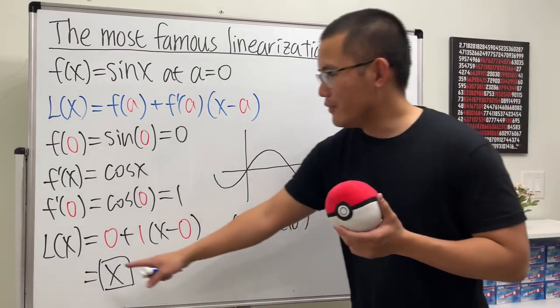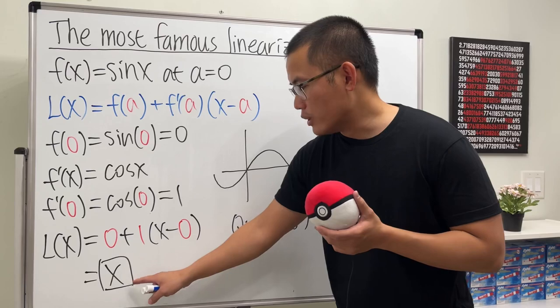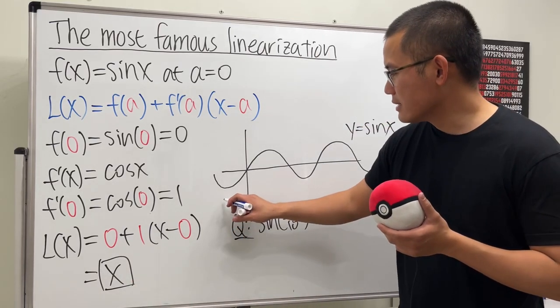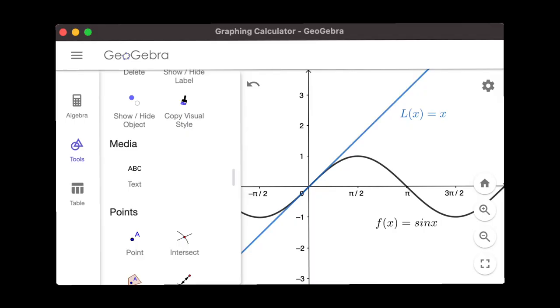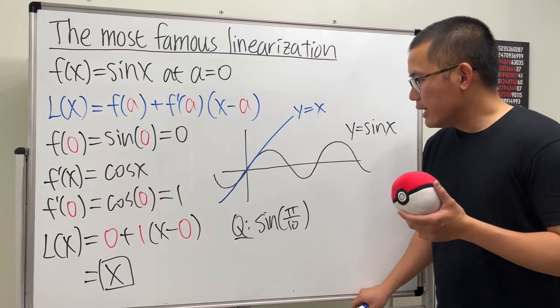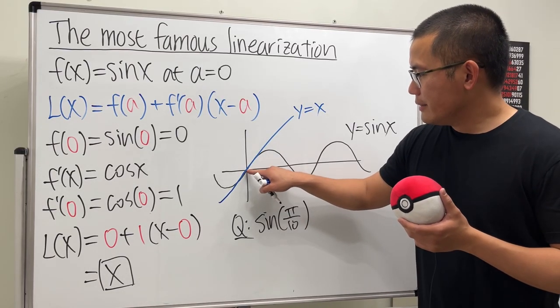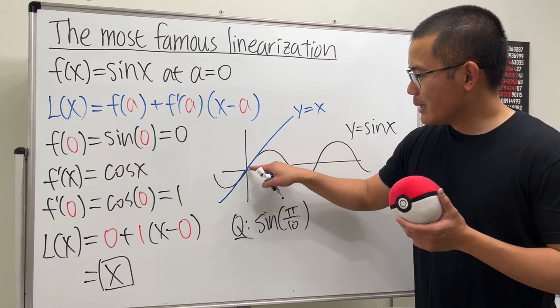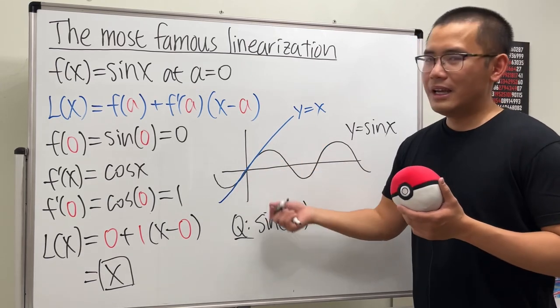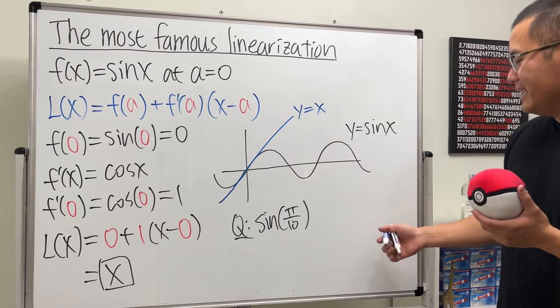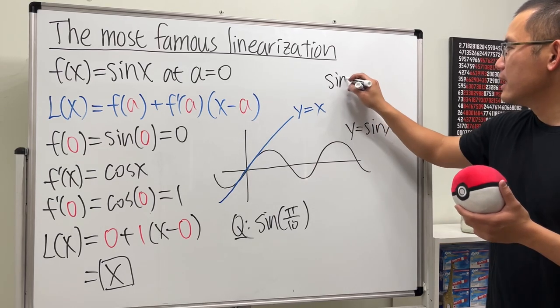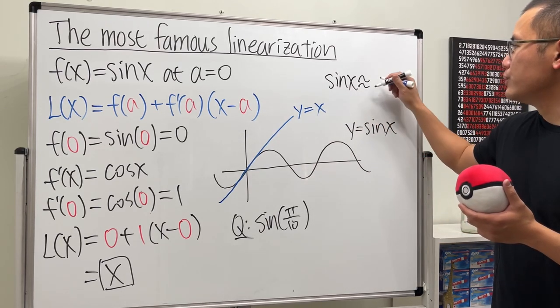You see that this right here is sine x, but if you're talking about L(x), which is actually just an equation of a line, and that's super nice because that's just x, so it looks like this. As you can see, around zero, the curve and the line, they are pretty much similar. So what we're saying is sine x is actually really close to x around zero.